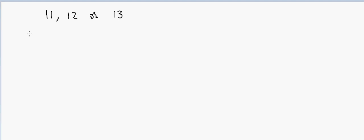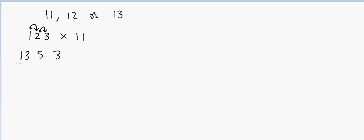Suppose I have 1, 2, and 3, and I want to multiply by 11. What I'll do is first take the last digit and write 3 here, then add 1 and 2 together — that gives 3 — and then add 2 and 3 together — that gives 5. So my answer will be 1, 3, 5, 3.